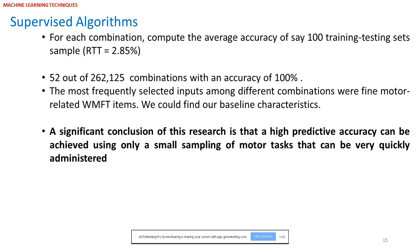For each combination we computed the average accuracy over 100 training and test instances, with an RTT of only about 3 percent. We found that 52 out of all these combinations of predictors yielded an accuracy of near 100 percent. Among them, the most frequently selected predictor across different combinations were fine motor-related Wolf Motor Function Test items. The significant conclusion is that high predictive accuracy can be achieved using only a small sampling of motor tests that can be very quickly administered.